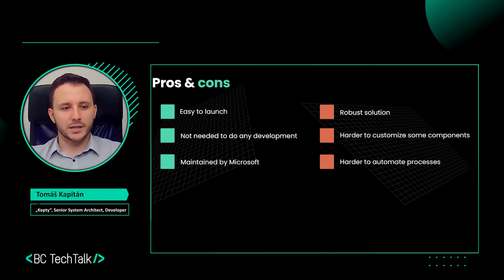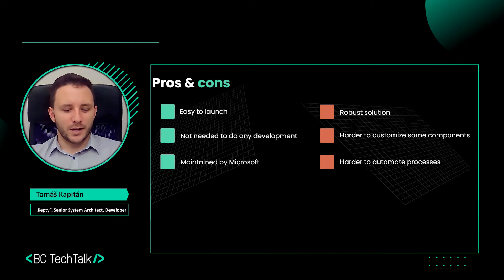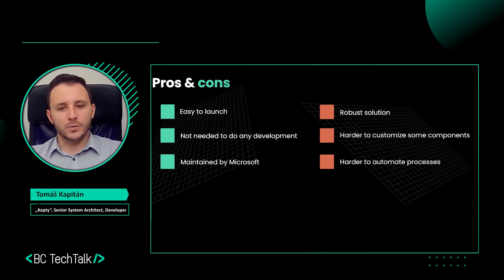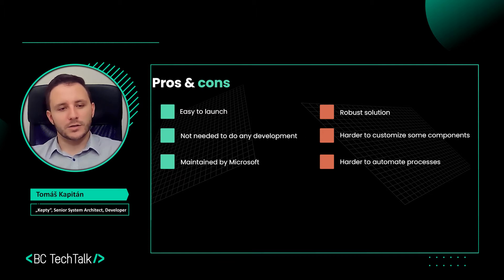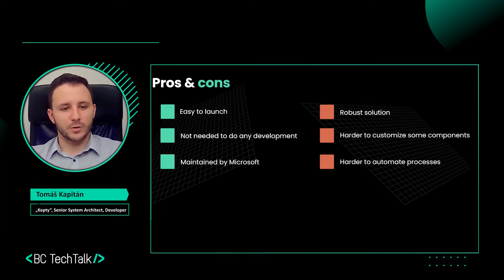You just connect to the Business Central instance under the web client address, so there's nothing that could go wrong once you have installed your Business Central instance or are working with the web client on mobile. Another good thing is that you don't need to do any development. If you have a stable application that works on the web client, there are some things you have to do differently to use it correctly on a mobile phone, but it's not necessary to do any development for a working solution.